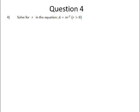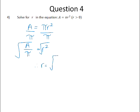Question 4: Solve for r in the equation a is equal to pi r squared, and r is greater than 0. So if we want to get r by itself, the first step is to divide both sides of the equation by pi. So that gives us r squared is a over pi. And then to find the value of r, we square root both sides, and we get r is equal to the square root of a over pi. Because we were told that r is greater than 0, we are only interested in the positive square root of that value.